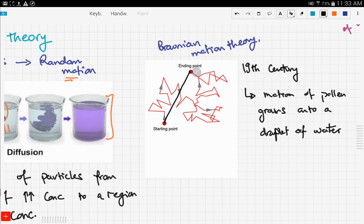This indicates that those particles possess some kinetic energy, and this kinetic energy enables the particles to move randomly.